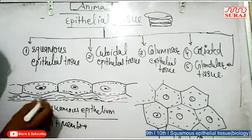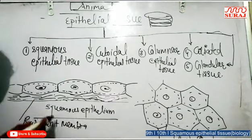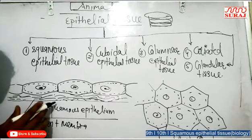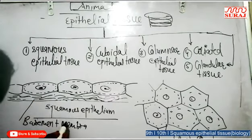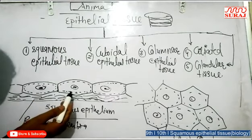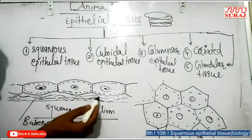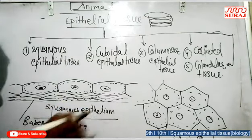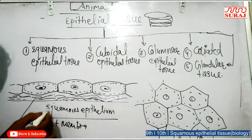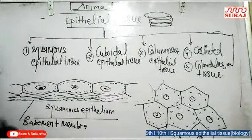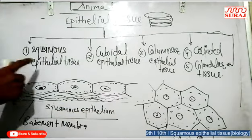The epithelium is not penetrated by blood vessels, but the blood vessels lie in connective tissue across the basement membrane. The basement membrane contains connective tissue in which blood vessels are present.